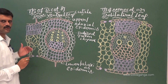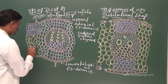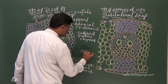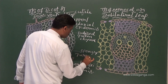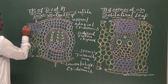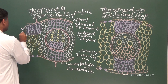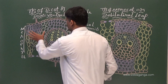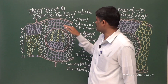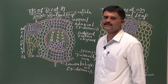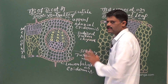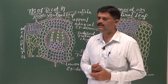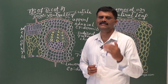The parenchyma cells — that is, the chlorenchyma cells — which are present towards the lower or abaxial epidermis are called spongy parenchyma. The spongy parenchyma is different from palisade parenchyma and contains a less number of chloroplasts.